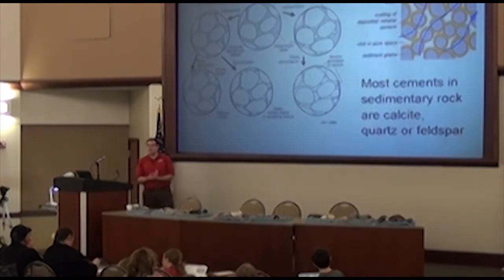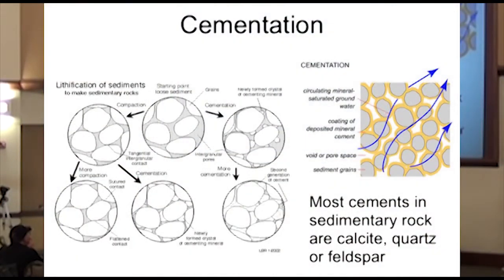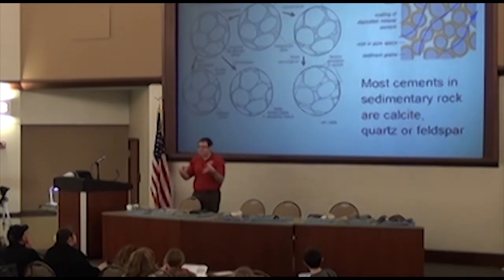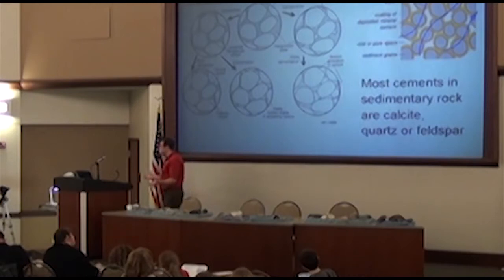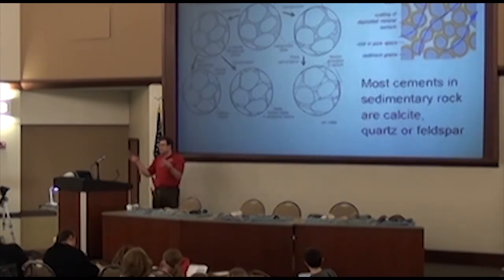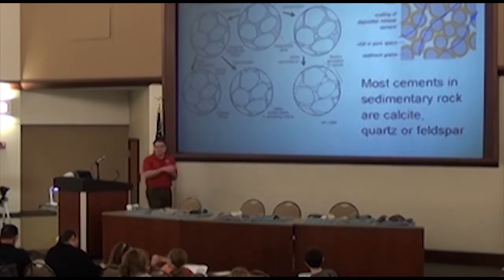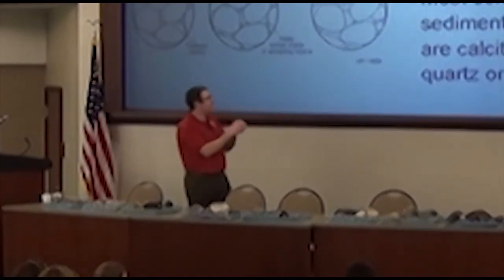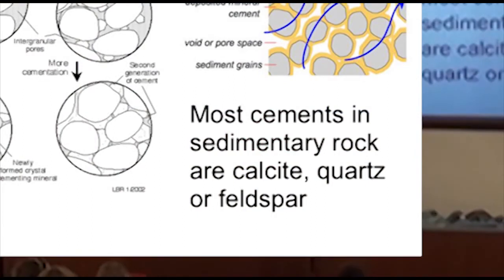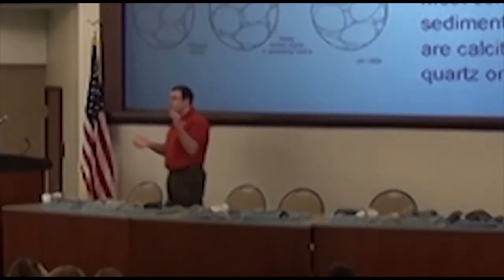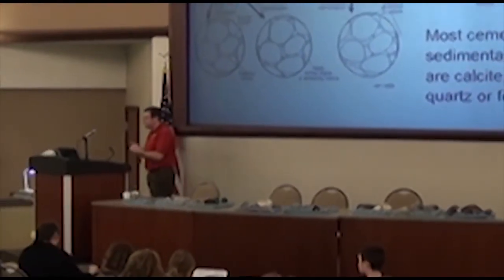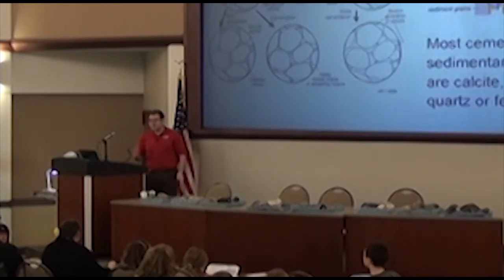Next we're going to talk about how they're stuck together — we call that cementation. What's the first part of that word sound like? Cement. So cement is a mixture of rocks and mortar that sticks things together, which is what we make roads and buildings out of. The same thing happens with sedimentary rocks. Most of the time, there's a fluid with dissolved minerals — like calcite, quartz, or feldspar — that sticks the rocks together. Sometimes, particularly with sandstone, it's just pressure that bonds them together — they almost weld from so much pressure.